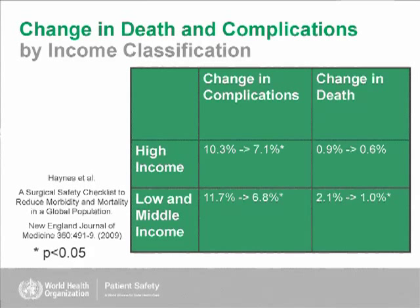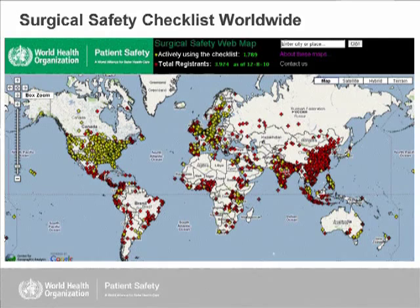These studies were published in 2009. The pilots were done in 2008. And now, all these gold crosses on the map are areas where the checklist is being actively used. You can see it spans all across all the continents — except Antarctica. In multiple countries, multiple languages, multiple settings — it's being used worldwide.